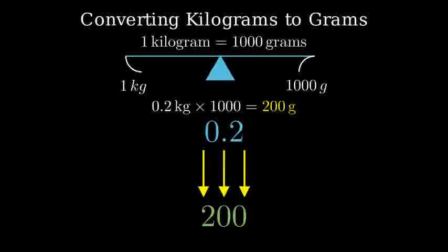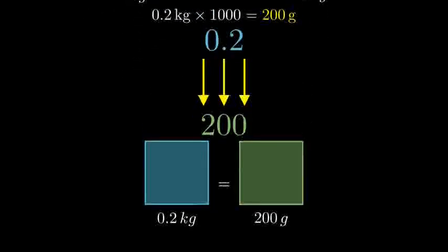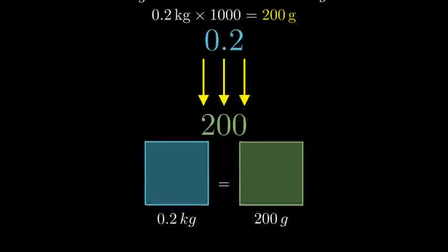Let's visualize what 0.2 kilograms looks like compared to 200 grams. They represent exactly the same mass, just expressed in different units.